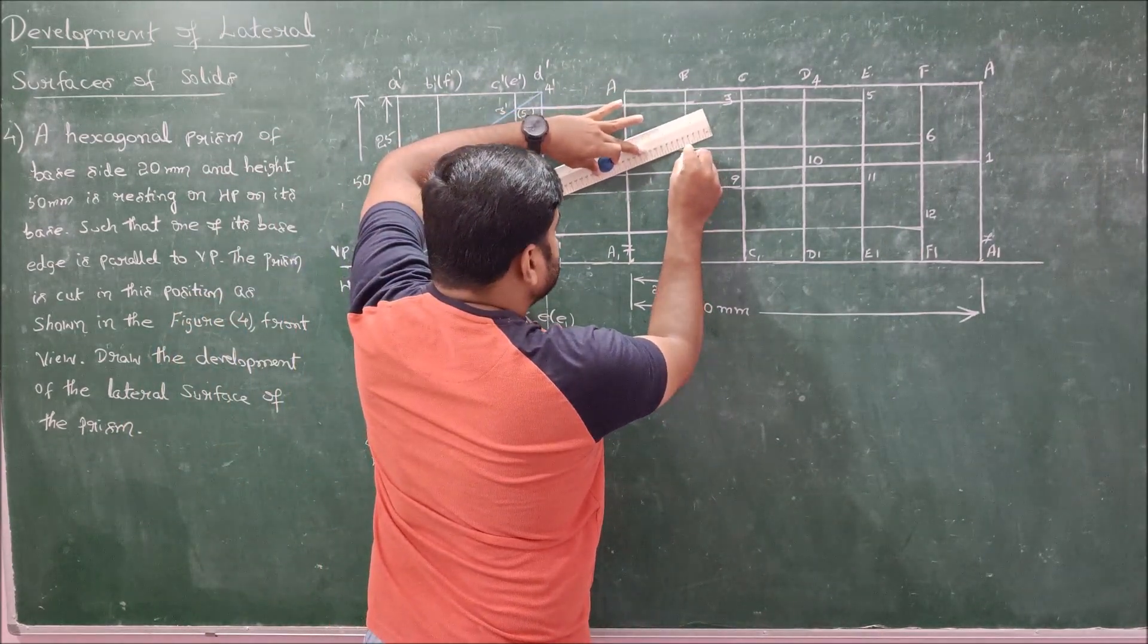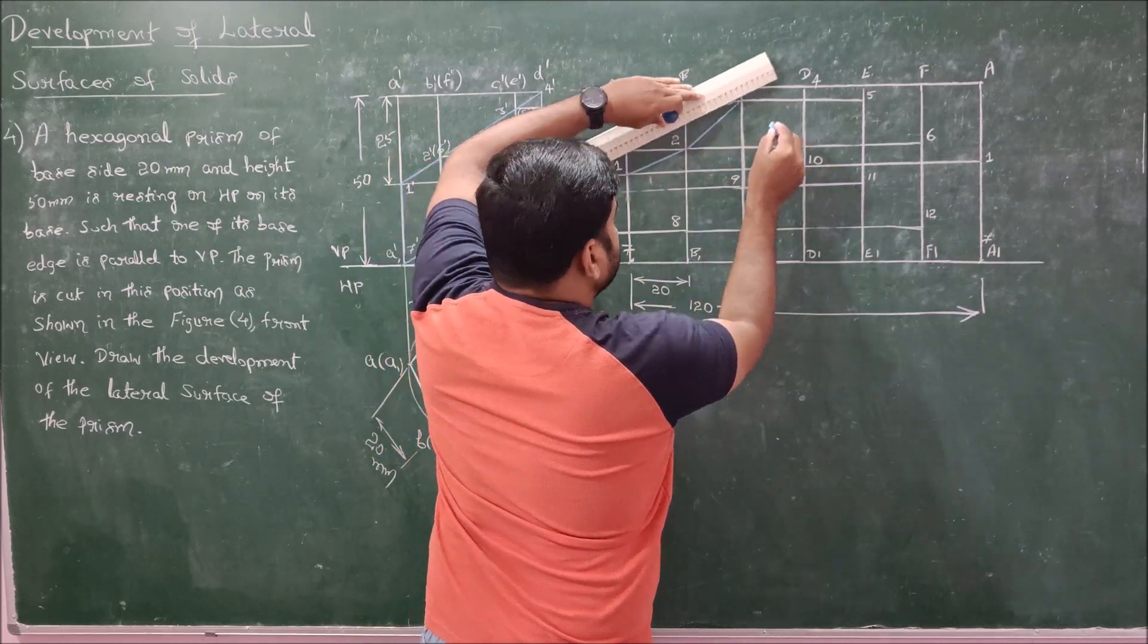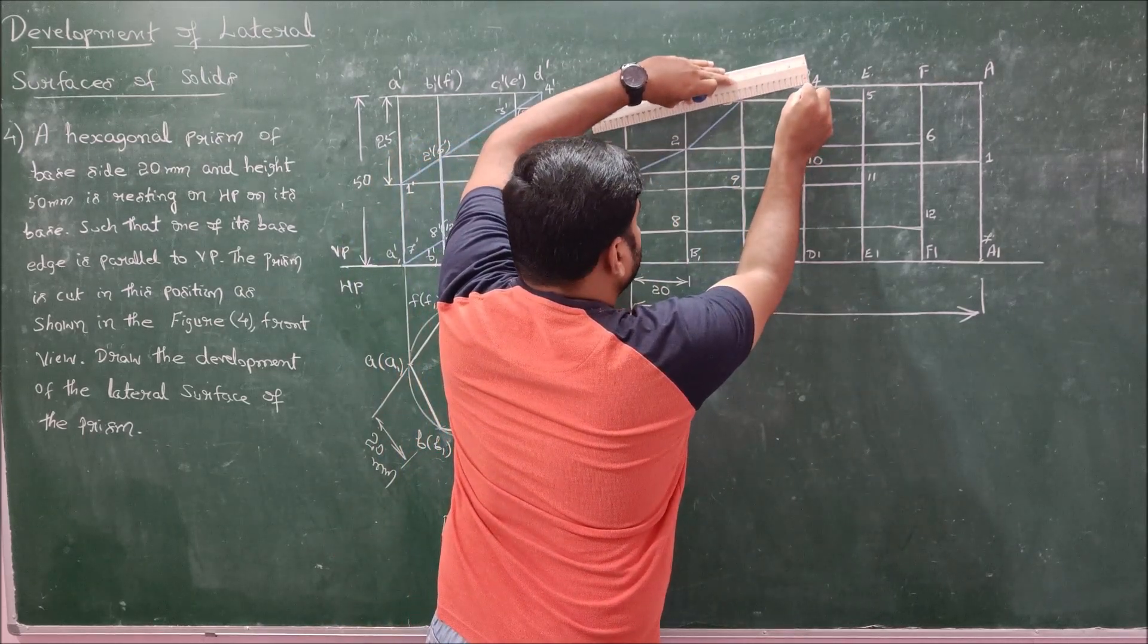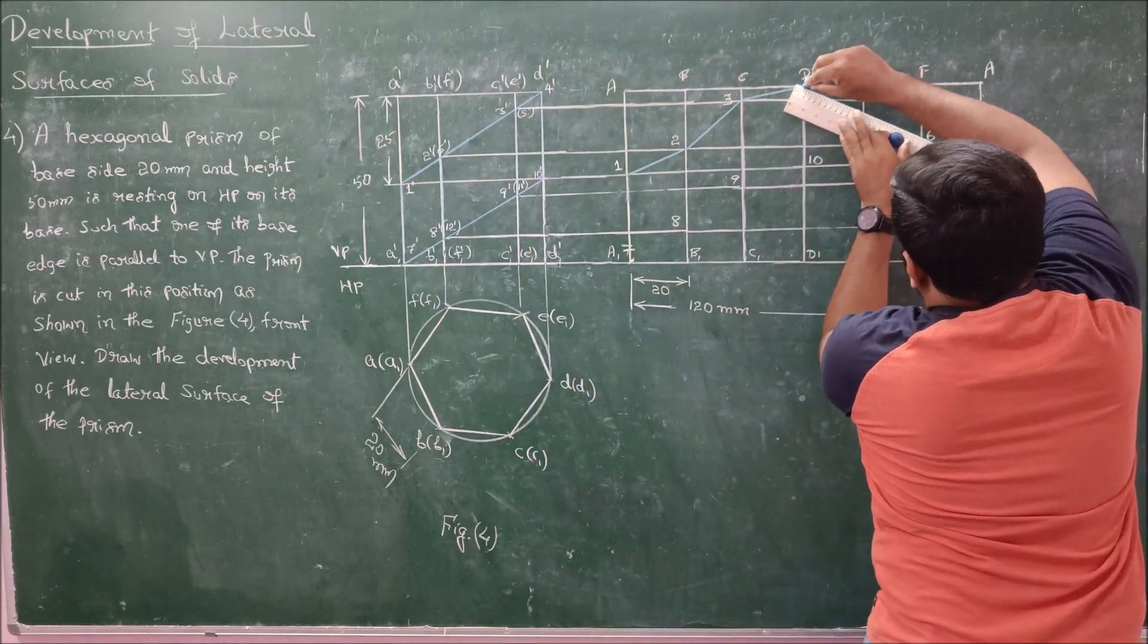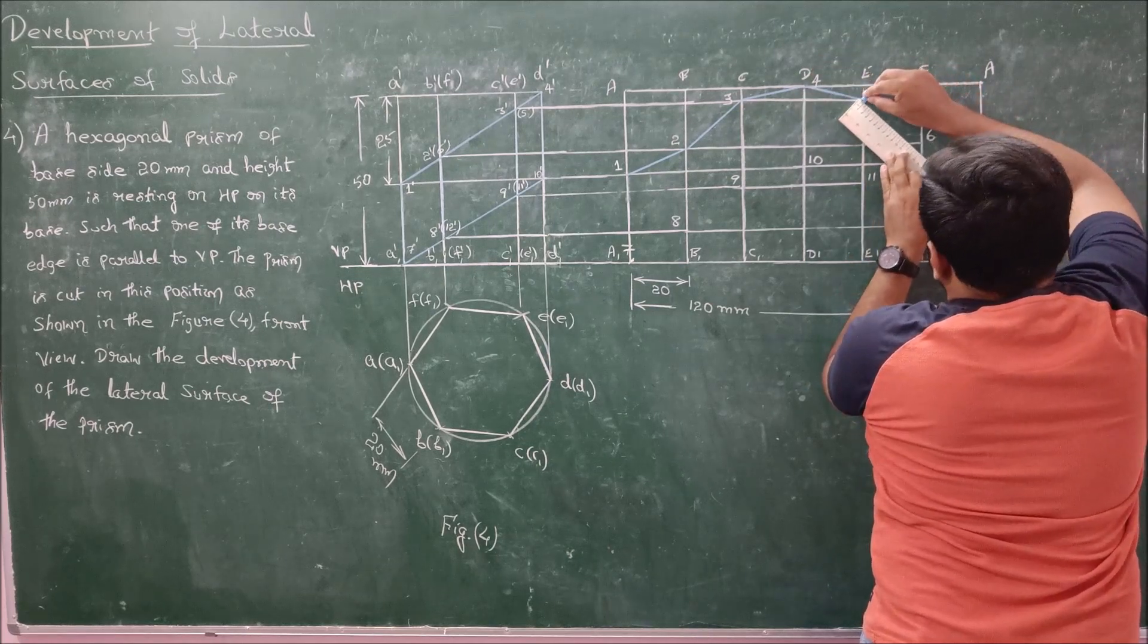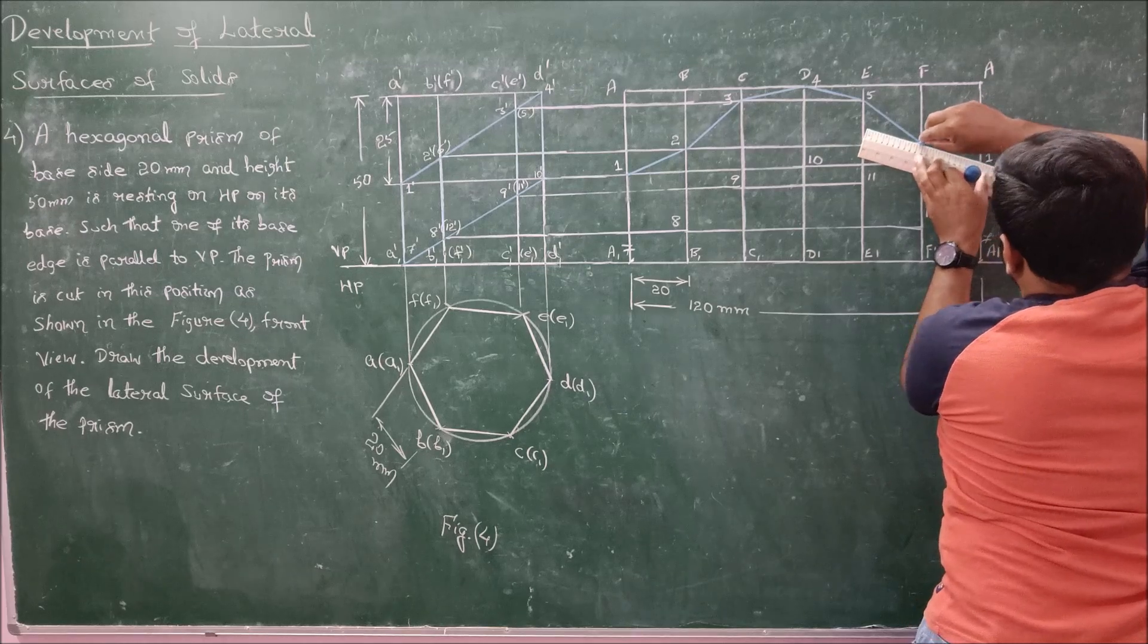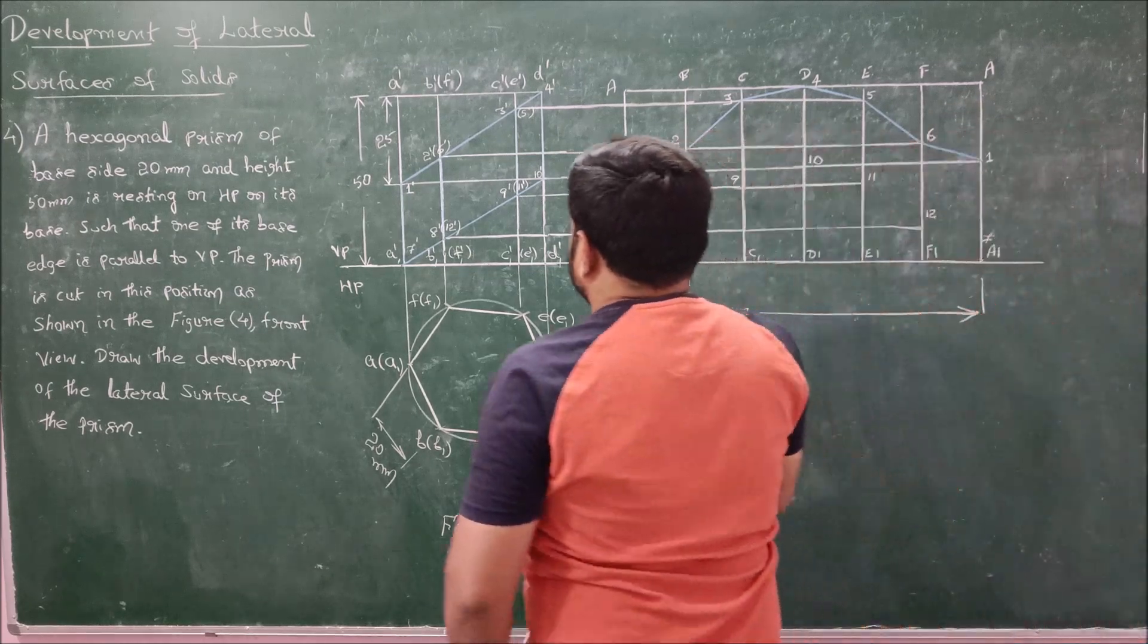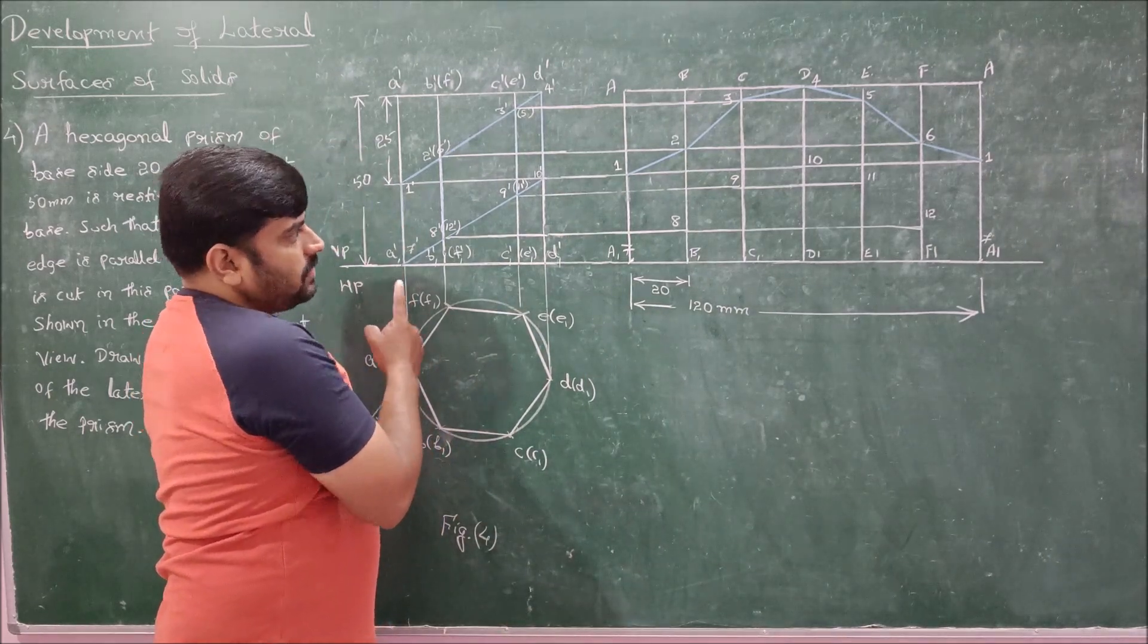So connecting the points 1 to 2, 2 to 3, then 3 to 4, 4 to 5, then 5 to 6, 6 to 1. So this is for first cutting plane.